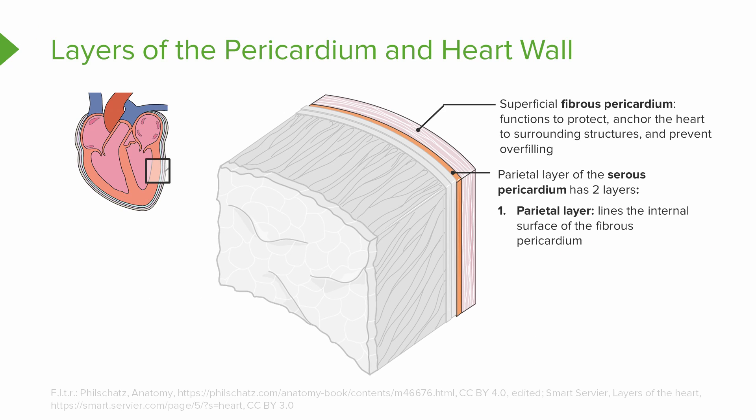Deep to the fibrous pericardium, we have the second layer, which is referred to as the serous pericardium. This has two layers as well. It has a parietal layer, which lines the internal surface of the fibrous pericardium, and then an internal visceral layer, which is also referred to as the epicardium and is found on the external surface of the heart.